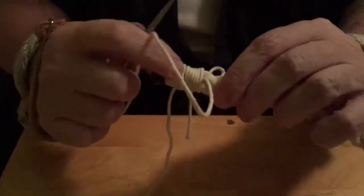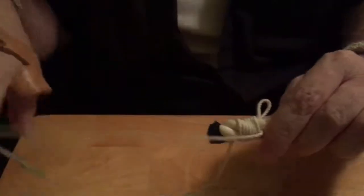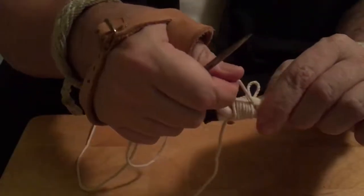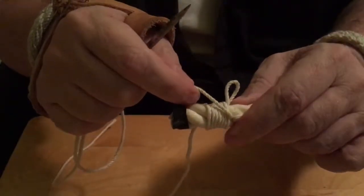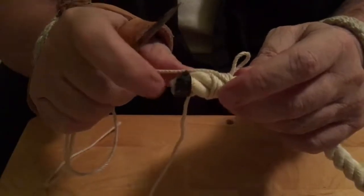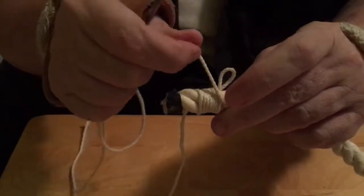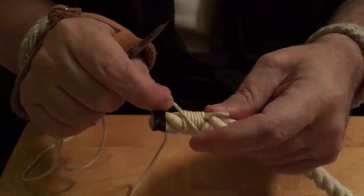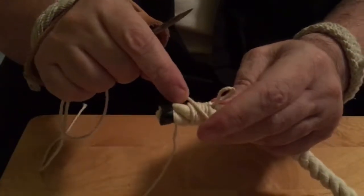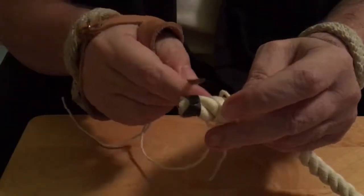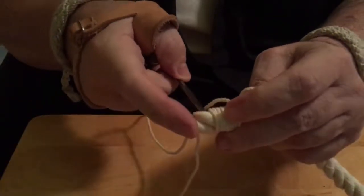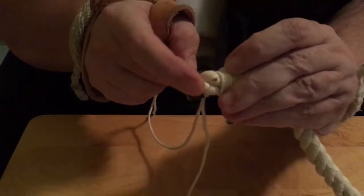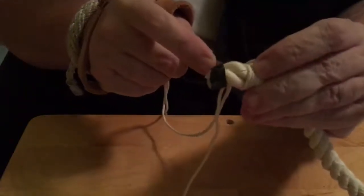Now we're gonna start locking in with the sailmaker's whipping here. So you take it when it comes out, follow along the groove to here, and then you take your needle, working away from you and coming under this strand.